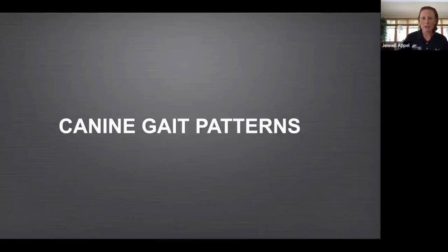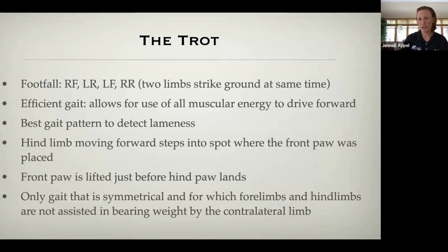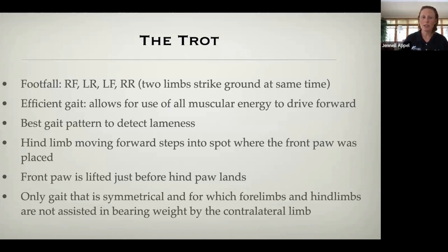Now we'll go into some gait patterns that are important for diagnosing injury. One of them is the trot. I use the trot all the time to help differentiate between one limb or another, because the trot is the most efficient gait for the dog — it allows them to use all their energy to move forward. It's the only gait where the forelimbs and hind limbs are not assisted by the contralateral limb in bearing weight. When the right front hits the ground, the left hind hits the ground at the same time — only two feet on opposite ends of the body are on the ground simultaneously. I'll show an example in regular motion and slow motion.